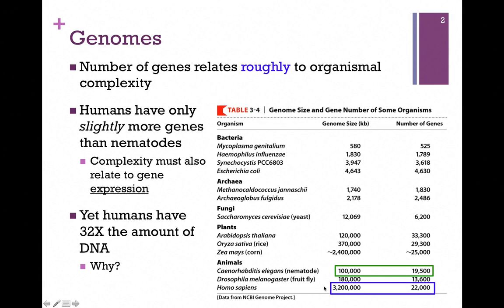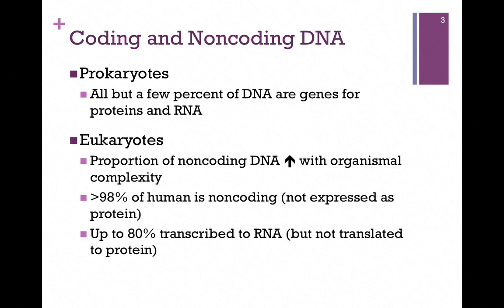If instead we look at genome size, we find that we have 32 times the amount of DNA than the worm, and so therefore genome size would be a better measure of the complexity of the organism.